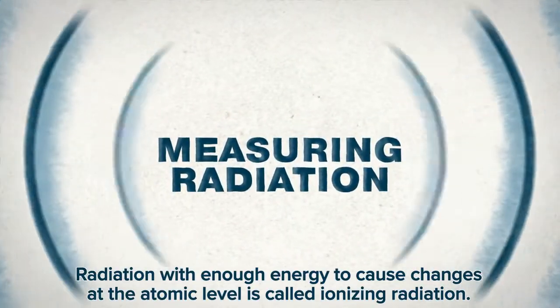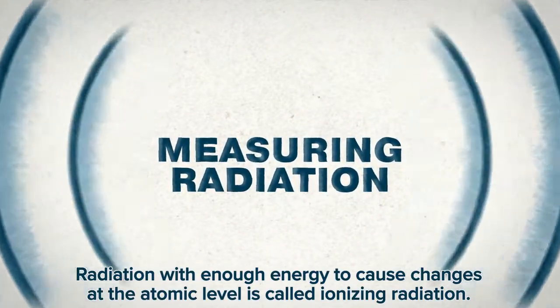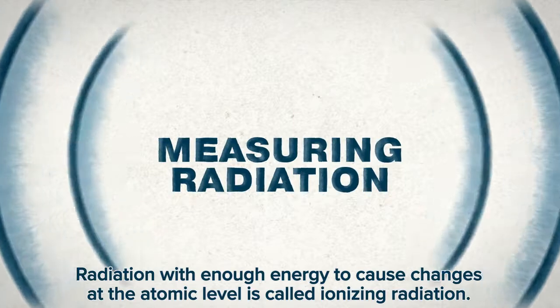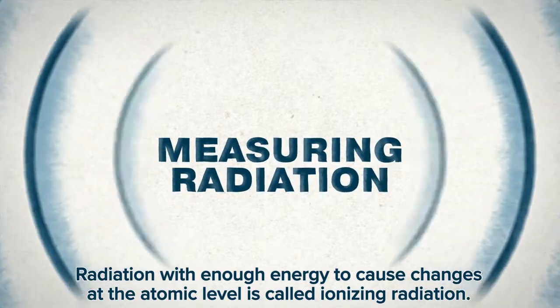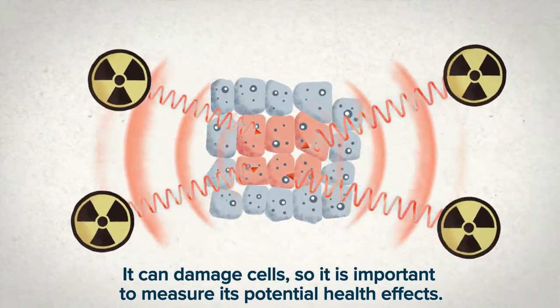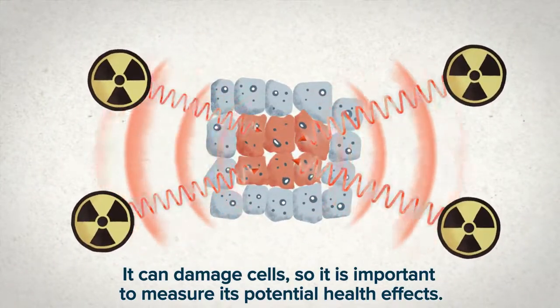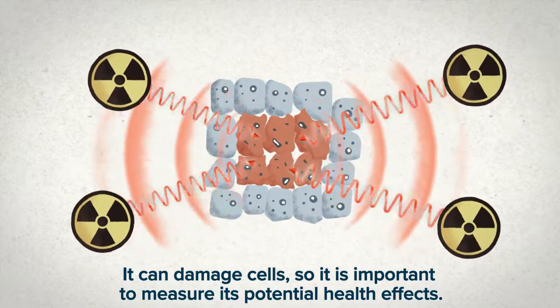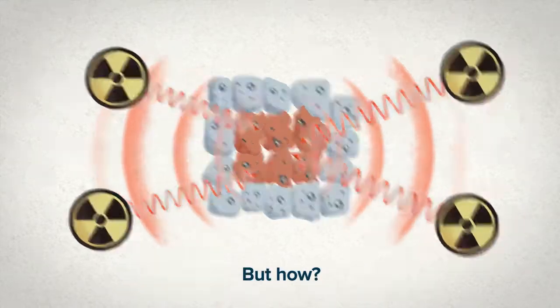Radiation with enough energy to cause changes at the atomic level is called ionizing radiation. It can damage cells, so it's important to measure its potential health effects. But how?